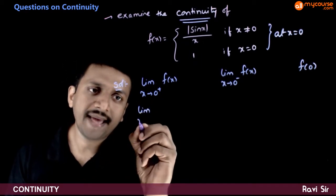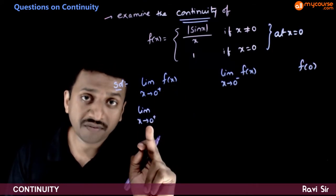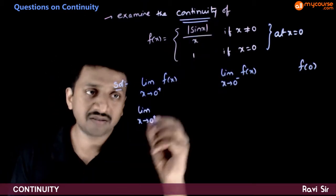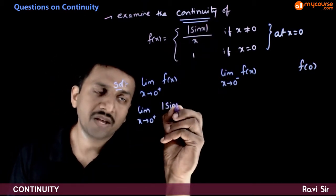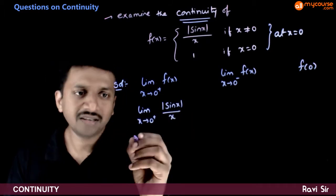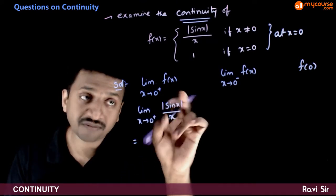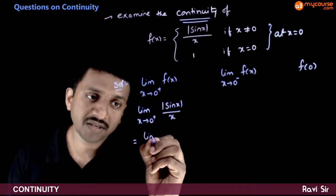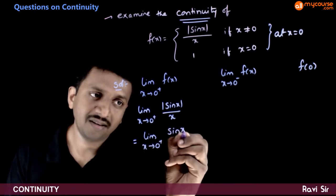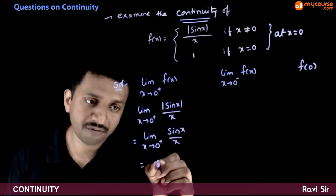Let us find each of these. For limit x tends to 0 plus, in the positive neighborhood of 0, as long as x is not equal to 0, the function is |sin x| / x. As x tends to 0 plus, sin x is positive, so |sin x| becomes plus sin x. So the limit becomes limit x tends to 0 plus of sin x / x. By the standard formula, this is equal to 1.